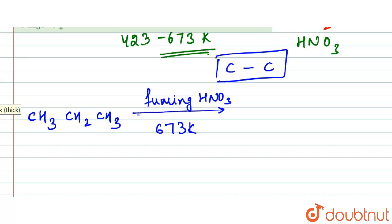...the first product formed is 1-nitropropane (CH3CH2CH2NO2), which is 25%, plus we have 2-nitropropane (CH3-CH(NO2)-CH3), which is 40%.